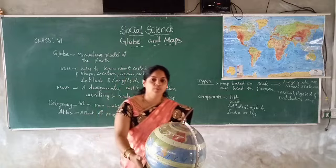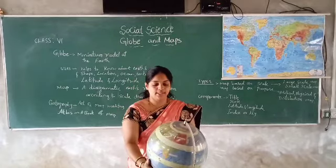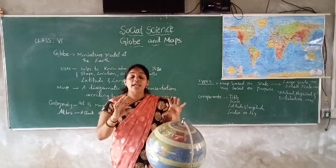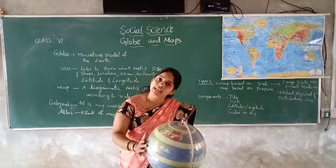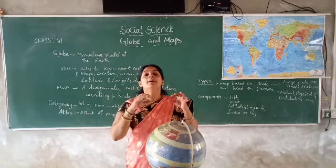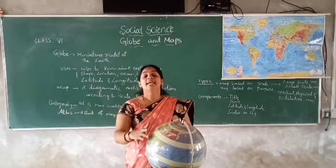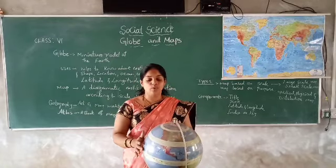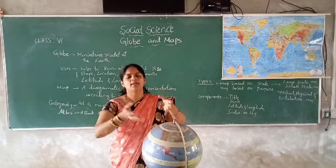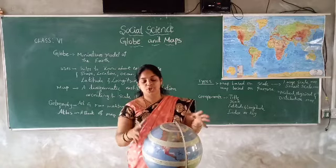What is a globe, children? Have you seen this globe? This is called globe. We can't recognize the parts of the earth, so for that reason we are using the globe. This globe is a model of the earth — a miniature model of the earth. We can't study the whole part of the earth, so our geographers made the globe. This globe is the shape of the earth.